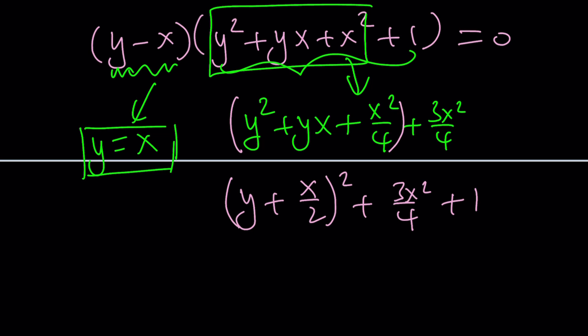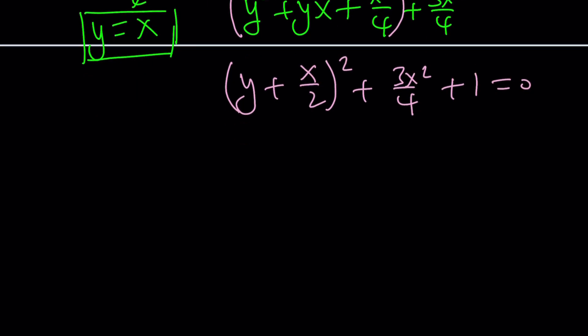Now, why does this equation have no real solutions? Because this expression on the left hand side is always positive. You know why? This is non-negative. This is non-negative plus 1. You can never get 0. Unless x and y are complex.